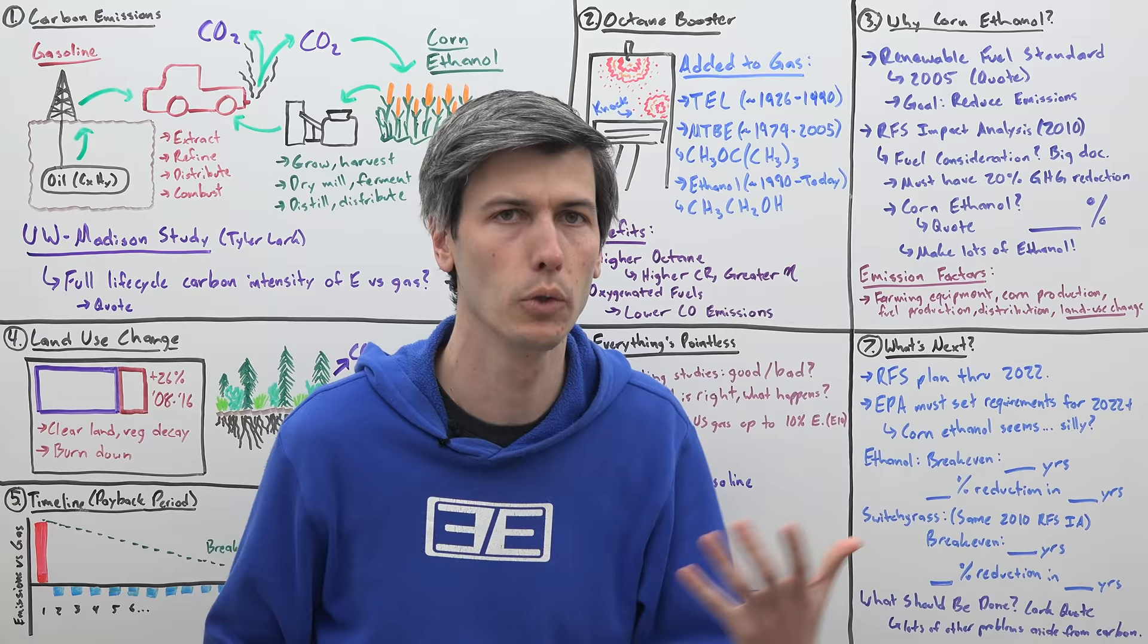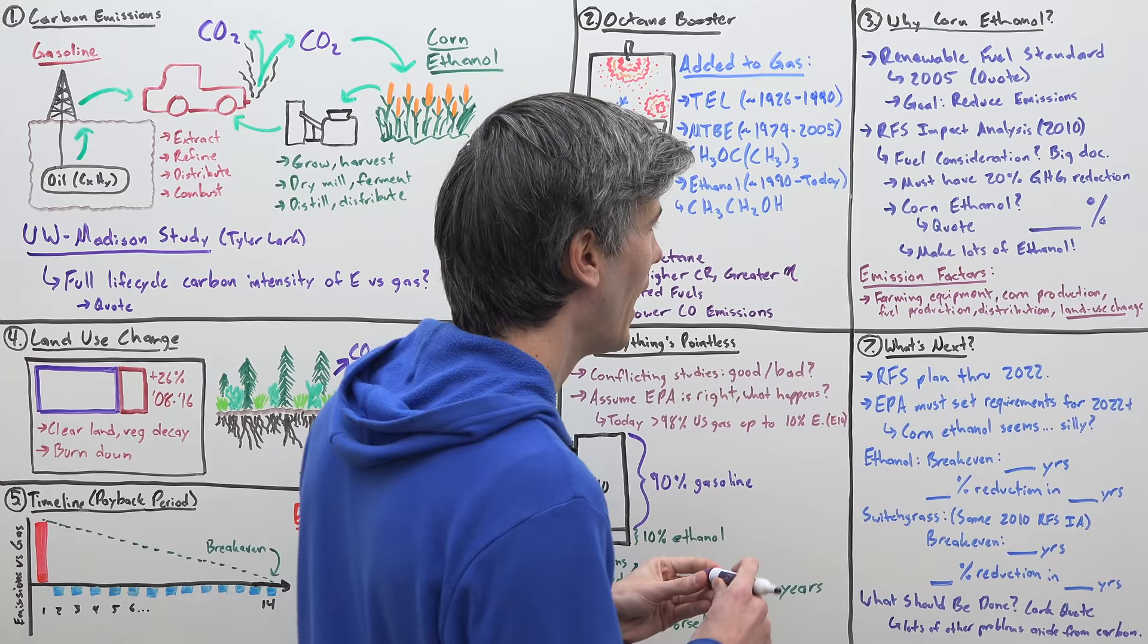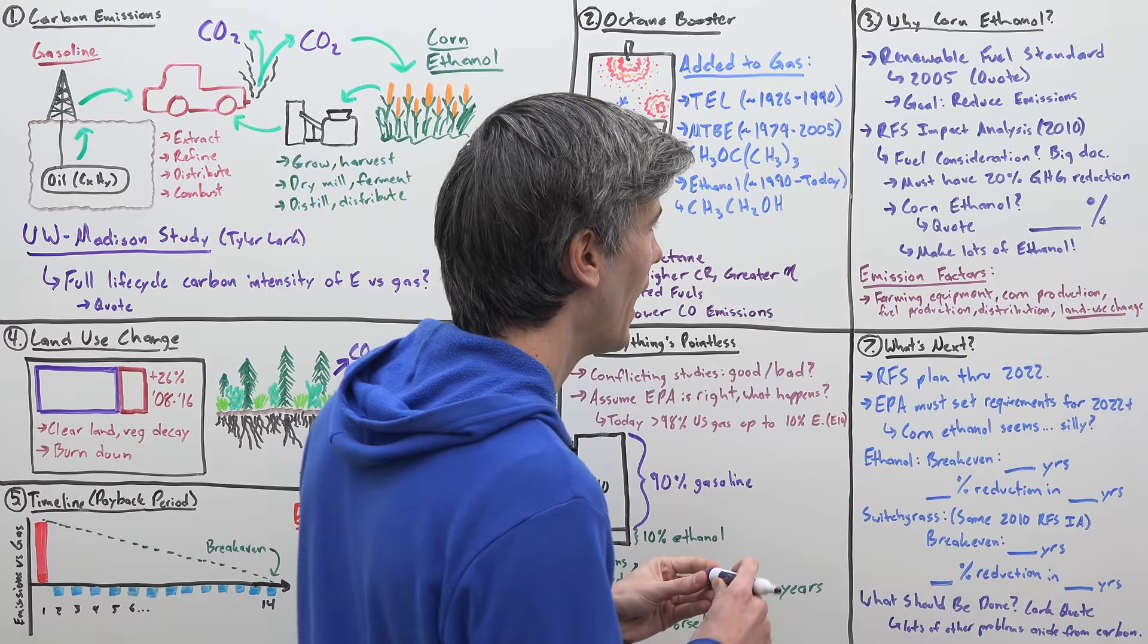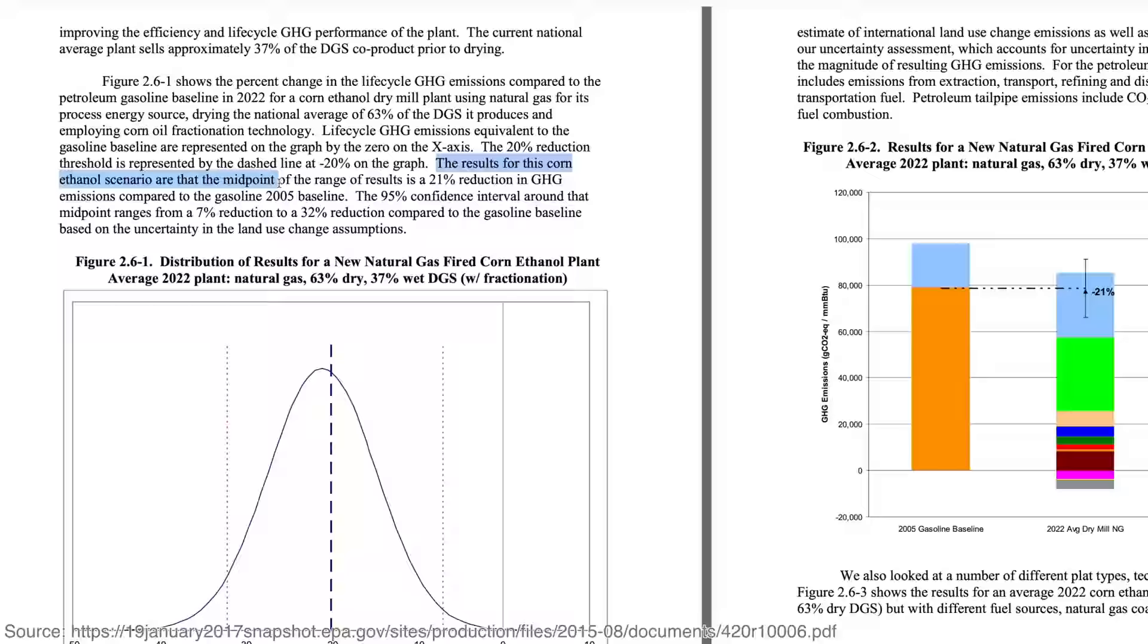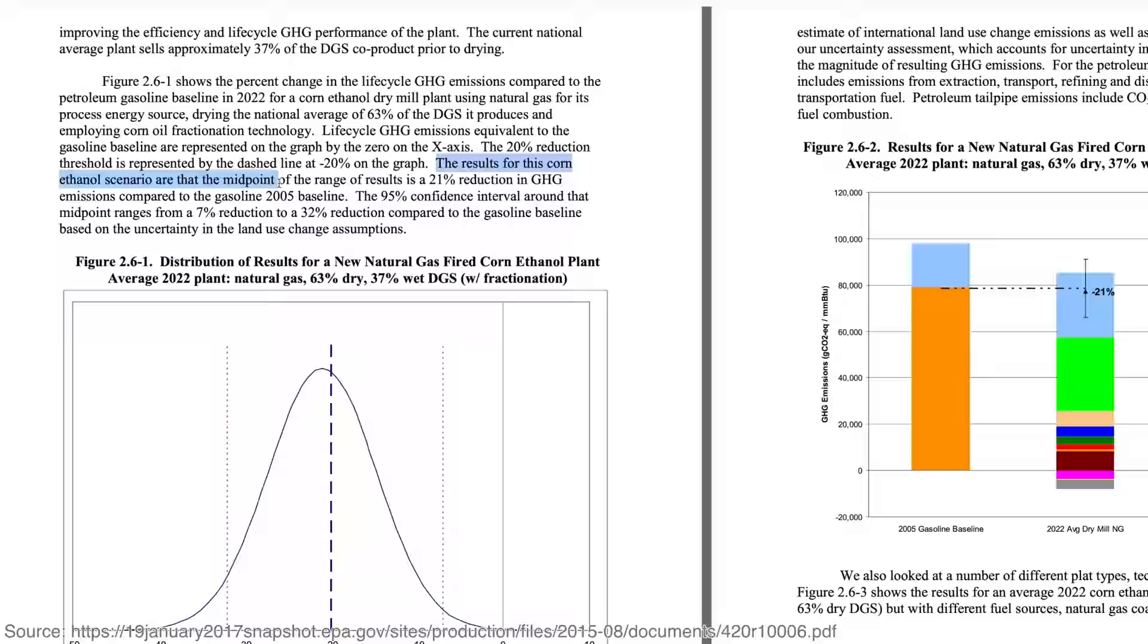But part of the requirements for this impact analysis stated that if we're going to select a fuel, it needs to have a 20% greenhouse gas emissions reduction. Okay, so then they looked into corn-based ethanol and they found that corn-based ethanol had a versus gasoline 21% reduction. So we made tons of ethanol. The results for this corn ethanol scenario is a 21% reduction in greenhouse gas emissions compared to the gasoline 2005 baseline.